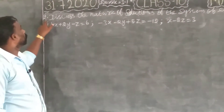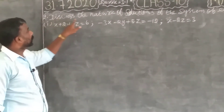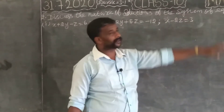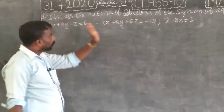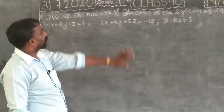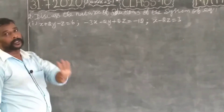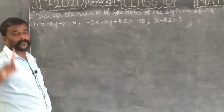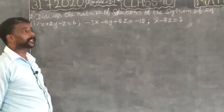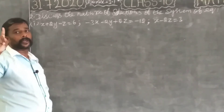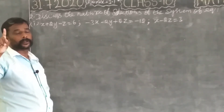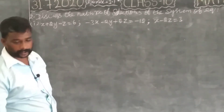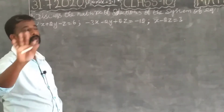The second question: discuss the nature of solutions of the system of equations. This system of equations has three solution answers. The first solution is no solution, next is unique solution, and next is infinity solution.